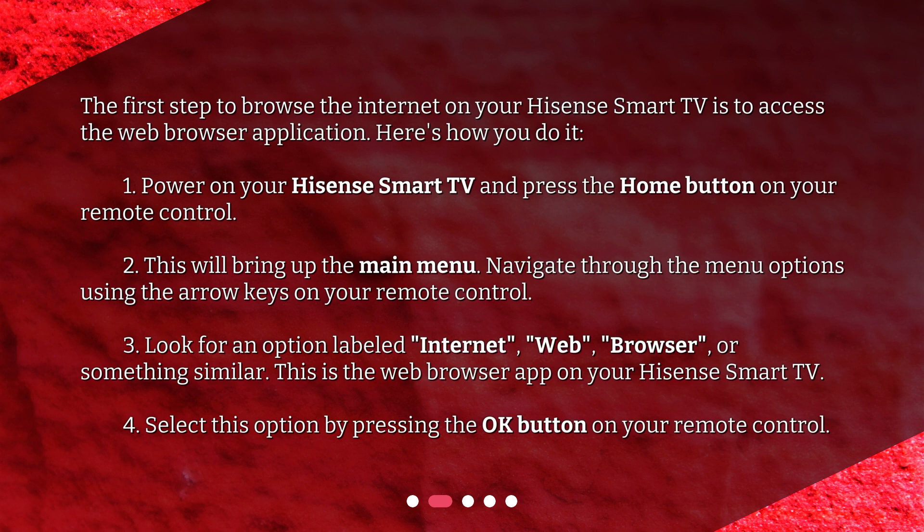Look for an option labeled Internet, Web, Browser, or something similar. This is the web browser app on your Hisense Smart TV. Select this option by pressing the OK button on your remote control.